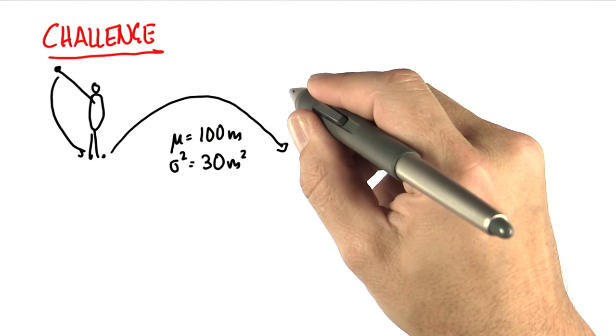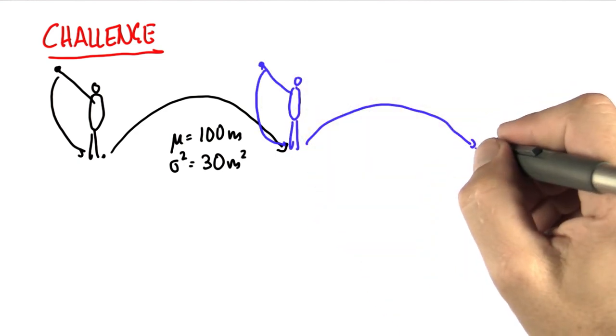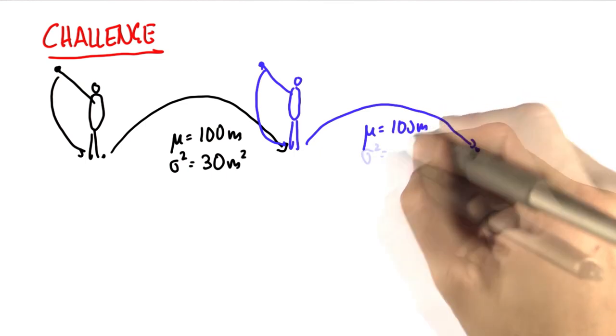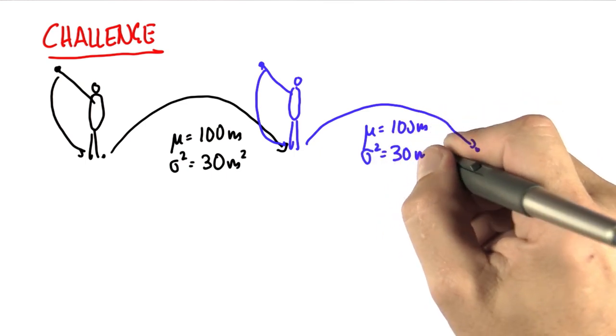And now you do exactly the same thing again. You hit the ball really hard, it goes flying, and has a final position. Again, you expect it to fly 100 meters with a variance of 30 meters squared.